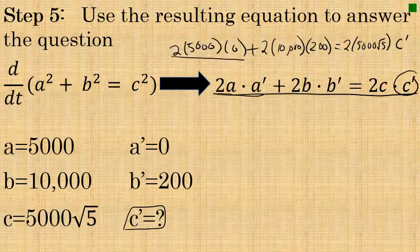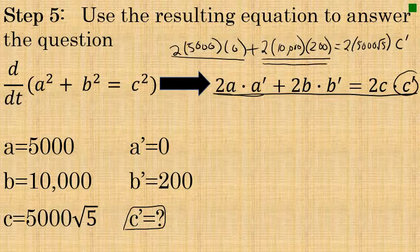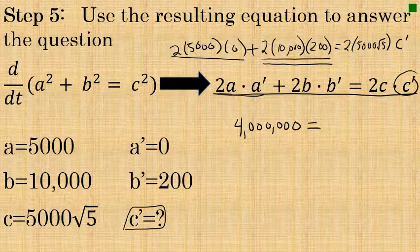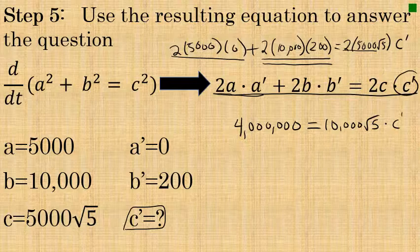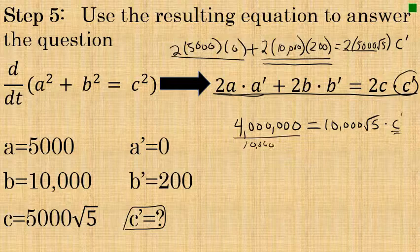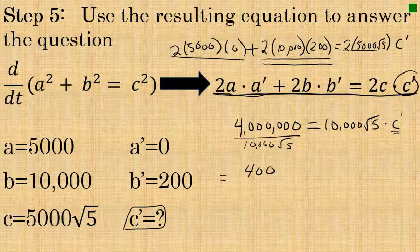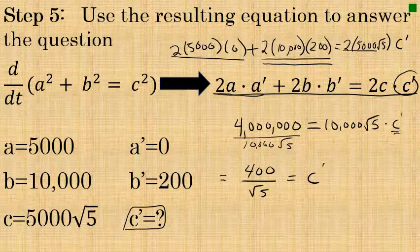The first term is zero, so we ignore it. The second term on the left — 2 × 10,000 × 200 — has a product of 4,000,000. On the right side, 2 × 5,000√5 = 10,000√5, so we have 10,000√5 · C′ = 4,000,000. Dividing both sides by 10,000√5 gives C′ = 400/√5.